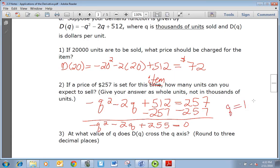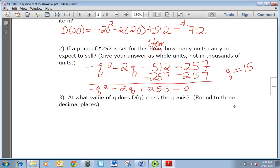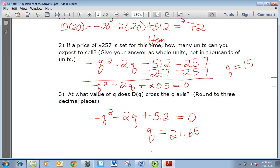So it's a quadratic function and you can use your quadratic formula to solve it, and you're going to get that q is 15, so 15 units. At what value of q does D(q) cross the q-axis? That's just asking us to take the D(q) function, set it equal to 0, and solve. Again, you can use the quadratic formula and you should get that q is 21.65. Now you might get two answers and one of them is negative, but it doesn't make sense to have negative items, so we throw out that answer.